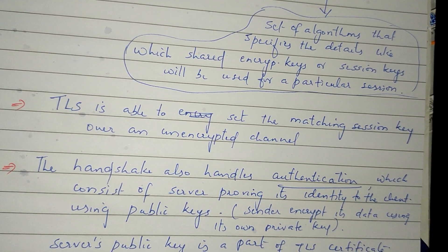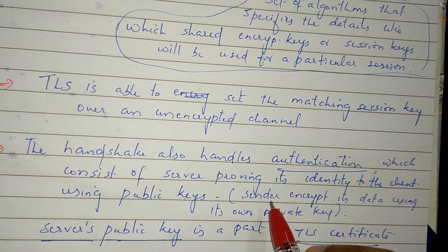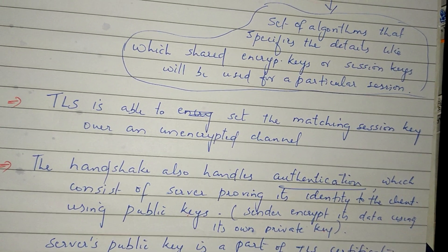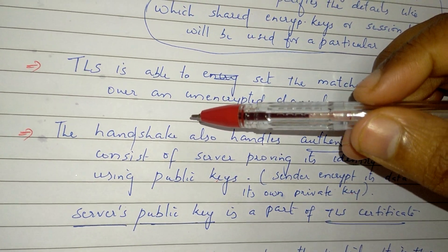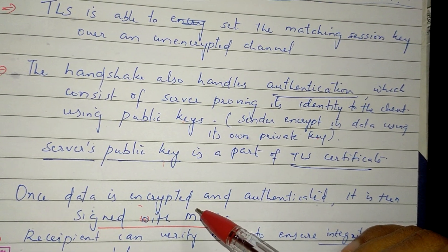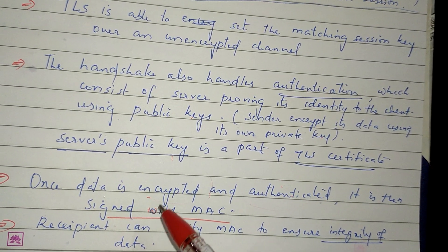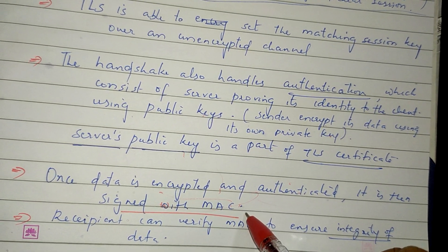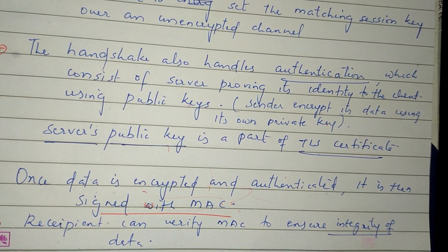Authentication uses public key cryptography: if data is encrypted with a public key, it must be decrypted with the corresponding private key. Once authenticated and encrypted, data integrity is ensured using a MAC. The receiver verifies the MAC to confirm the message has not been altered.